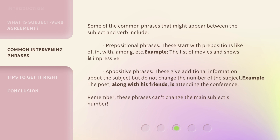Some of the common phrases that might appear between the subject and verb include Prepositional Phrases. These start with prepositions like of, in, with, among, etc. Example: 'The list of movies and shows is impressive.'